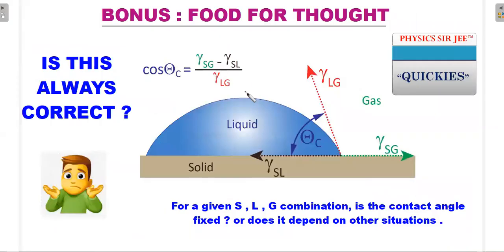But now the bonus food for thought in this video is: is this always correct? Because this picture gives us an equation that is there even in NCERT. Is this always going to be the condition? Because if this is true, then come what may, whatever is the situation, once the liquid is at rest—remember, all that we are studying is called static surface tension. When the liquid is moving, all these things will not be valid. So once the liquid has come to rest, always is the cos θ the same for a given pair of SG, SL, and LG?